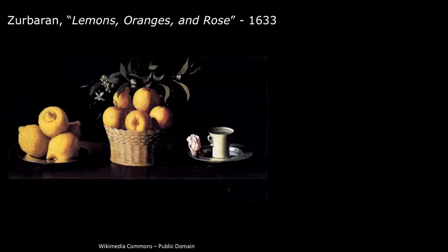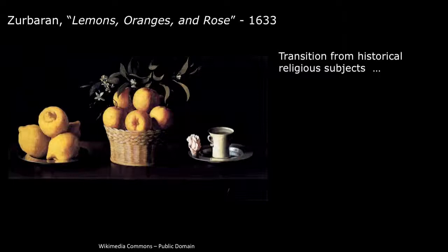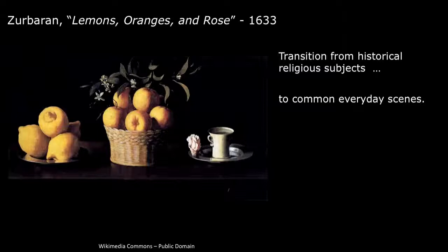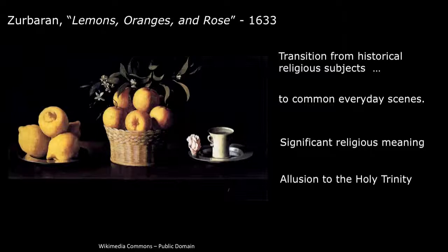The first Baroque painting we're looking at is by Zurbarán, called Lemons, Oranges, and Rose from 1633. Zurbarán bridges the transition from historical religious subjects to more common everyday still-life scenes. Most of his commissions came from the Roman Catholic Church, so he painted many portraits of saints as well as still lifes, but they all had a religious purpose. To the devout Catholics in the 17th century, the apparently humble objects represented here have significant religious meaning. The measured placement of three motifs was an allusion to the Holy Trinity. Like the classical still life, this painting depicts the physical character of the objects and the shallow space they inhabit, revealing the rough textural skin in great detail.